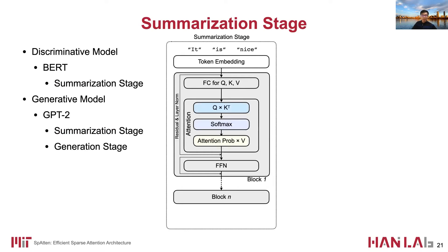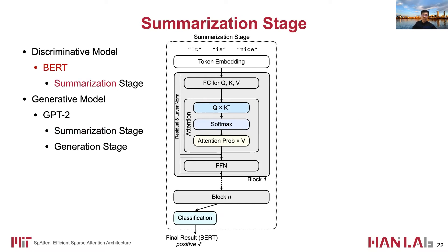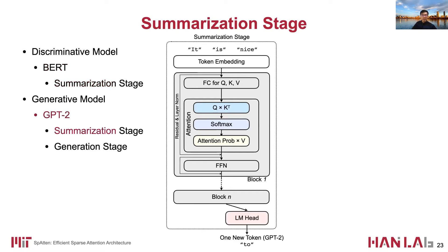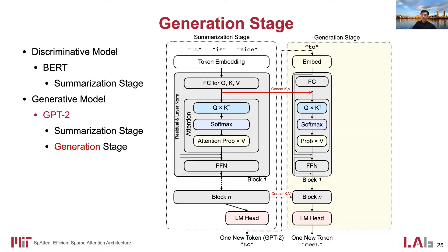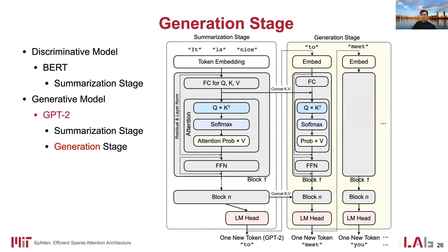Attention has three steps which we will introduce in detail later. An important point is that in the summarization stage, QKV are all 2D matrices. After multiple blocks, discriminative models such as BERT append a classifier to get final results. Generative models such as GPT-2 apply a language model head to generate a new token, which is then fed to the generation stage. One iteration in the generation stage is similar to summarization, but the biggest difference is that the query is one single vector, while KV are reused from the summarization stage and remain matrices.